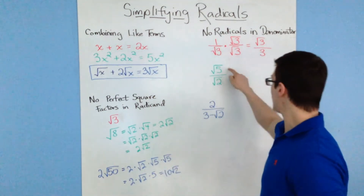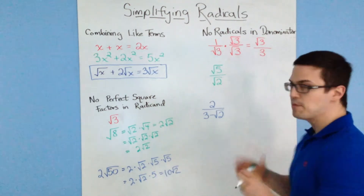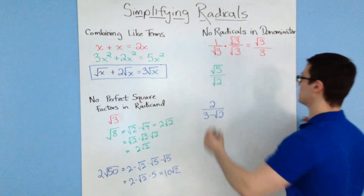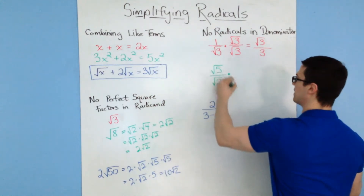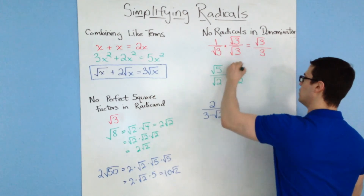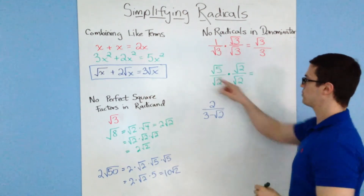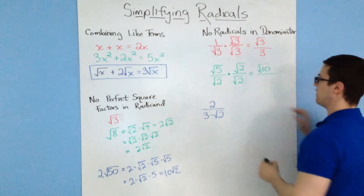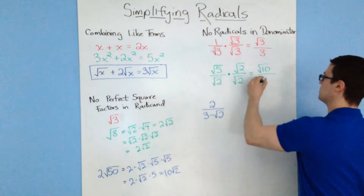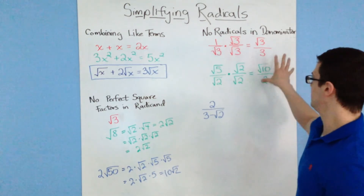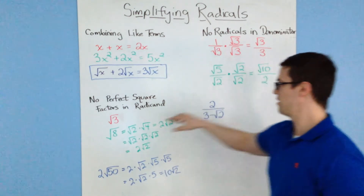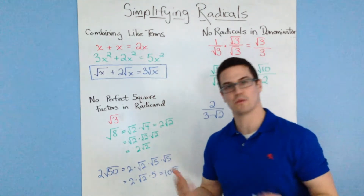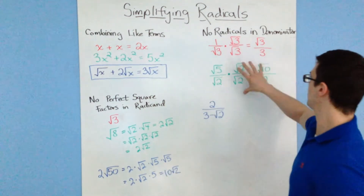The next example has a radical divided by a radical. The same rules apply — it might look scarier but it really isn't. You multiply by our fancy 1, which in this case is square root of 2 over square root of 2. Multiplying across, square root of 5 times square root of 2 is square root of 10, divided by square root of 2 times square root of 2, which is 2. Check whether there are any perfect square factors in the radicand of root 10 — there aren't, so it's fully simplified.